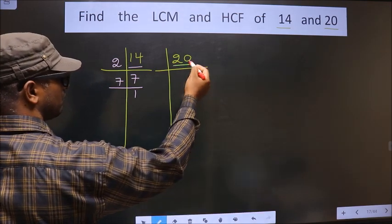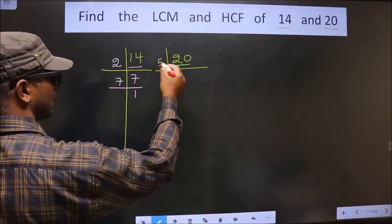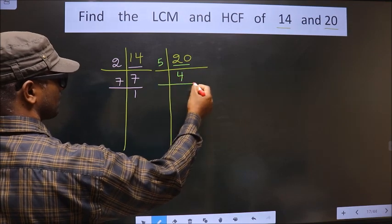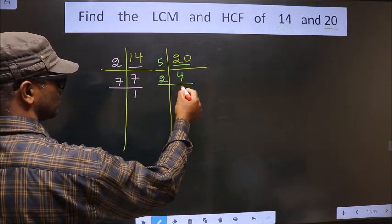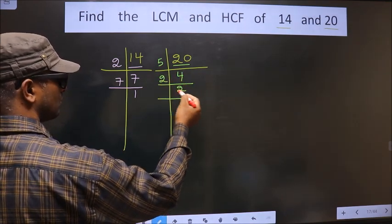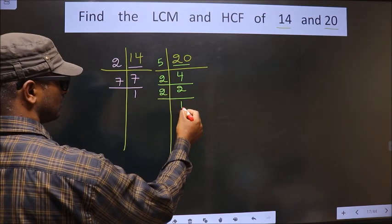Here we have 20. 20 is 5 fours is 20. Now 4 is 2 twos is 4. Now 2 is a prime number, so we take 2 ones is 2.